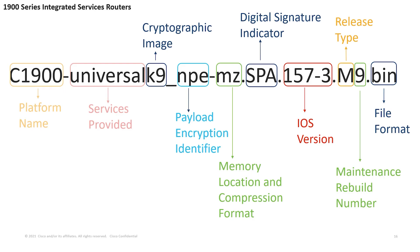Taking an image name from the 1900 series ISRs, we can view some added information. First, the platform name is indicated right in the front. Next is the universal identifier we talked about previously. K9 represents that this is a cryptographic image. NPE stands for no payload encryption. MZ indicates that the version of the Cisco IOS image runs from RAM and the IOS file is compressed. The digital signature SPA, as previously discussed. The IOS version is in here as well, being 15.7.3. M is the release type again, meaning it is an extended maintenance release, and there is also an included maintenance rebuild number, which is 9. Bin is the file format type for the image.